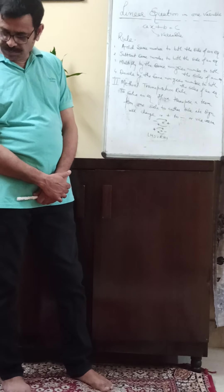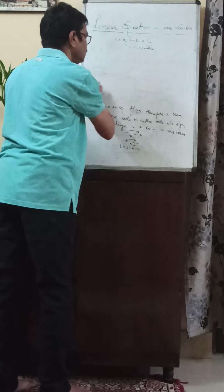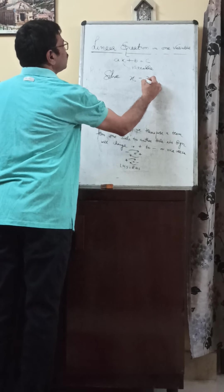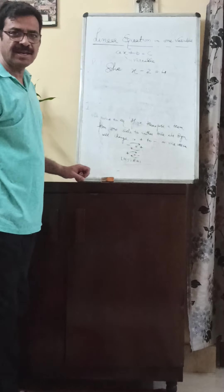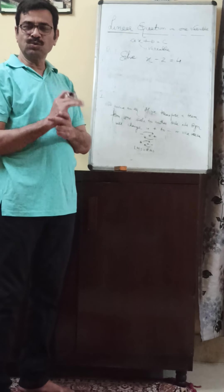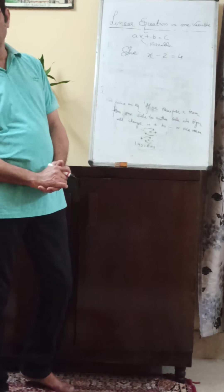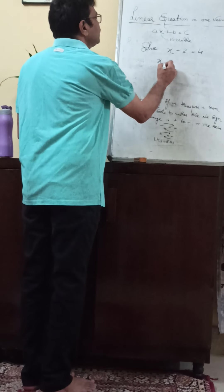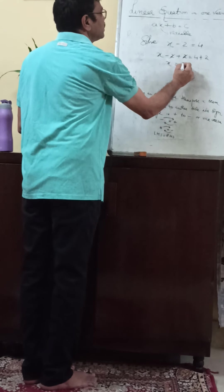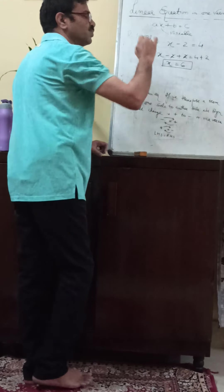Now I will give some examples of how we can apply these rules to solve equations. First, solve: x minus two is equal to four. This is a linear equation in one variable where the variable is x. Using rule one, I am adding two to both sides of the equation. This two will cancel with this two, giving x is equal to six. So x equals six is the solution.